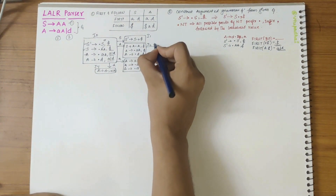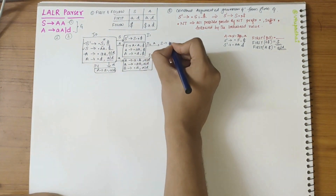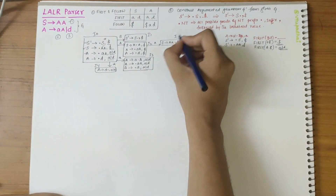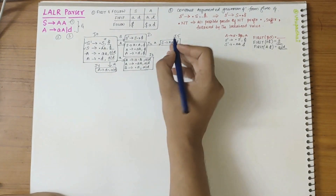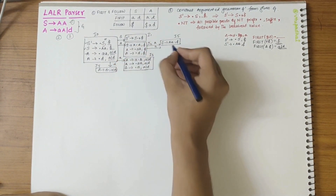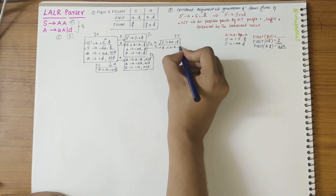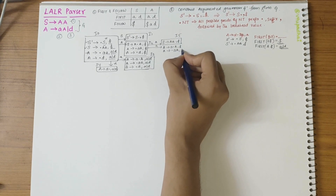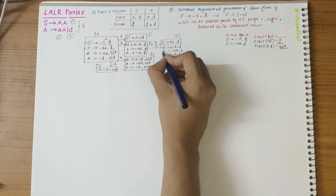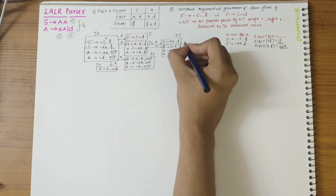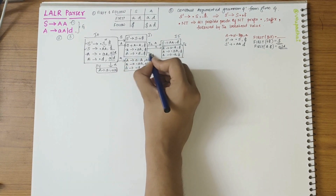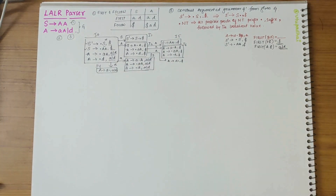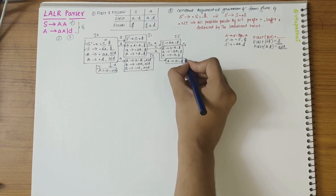In I2 over A, I write S derives AA dot comma dollar — after dot I have nothing to expand, so this is I5. Over small a I get A derives a dot A comma dollar — this is I6. After dot I have A, a non-terminal, so I write A derives dot AA comma dollar and A derives dot D comma dollar. Over D I get A derives D dot comma dollar — this is I7.